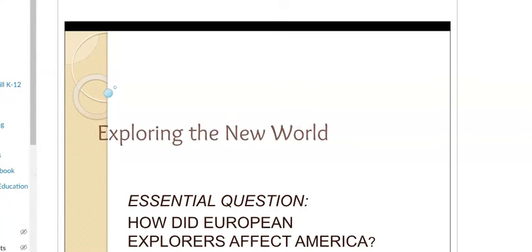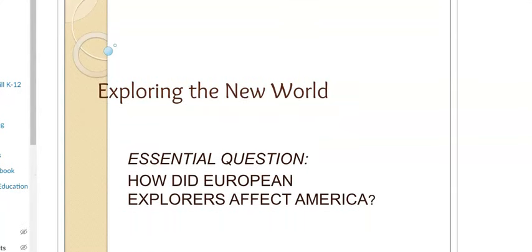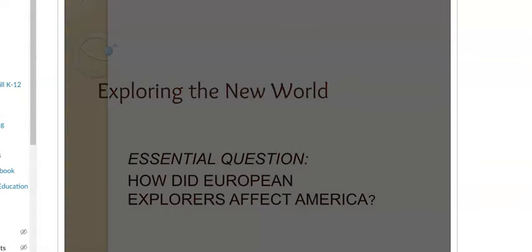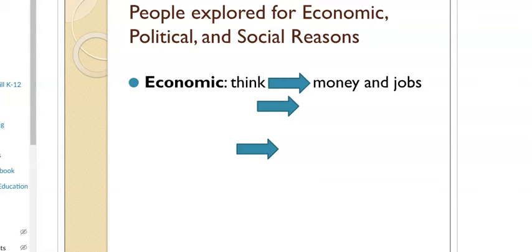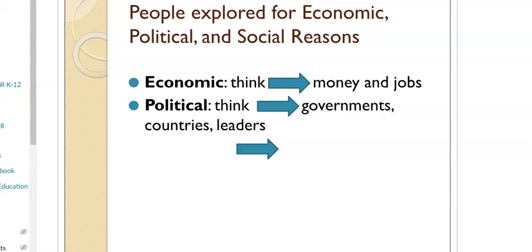Here we're looking at how and why did people explore. They explored for political, social, and economic reasons — this is kind of like the God, Gold, Glory we discussed before. Economic means thinking about money and jobs. Political means people wanted to be in government positions, they wanted to be leaders. And social means beliefs and relationships.